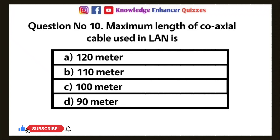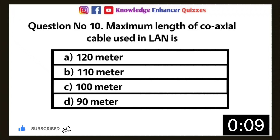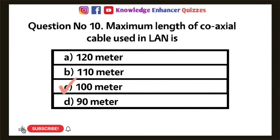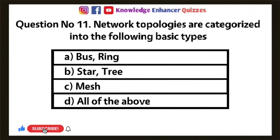Question 10: Maximum length of coaxial cable used in LAN — Option A: 120 meter, Option B: 110 meter, Option C: 100 meter, Option D: 90 meter. Option C is the right answer.